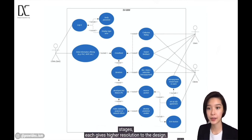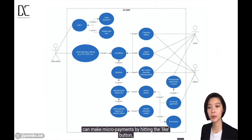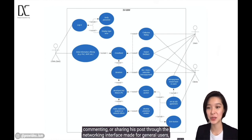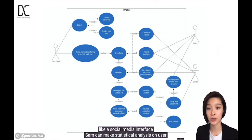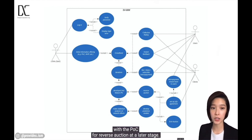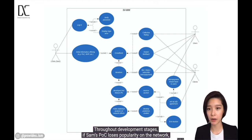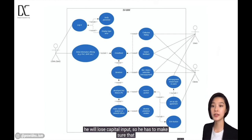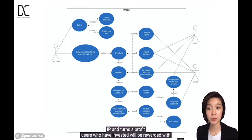Any users who appreciate the proof-of-concept and wish for it to be further developed can make micropayments by hitting the like button, commenting, or sharing his post on a networking interface — for instance, a social media interface made specifically for general users. Sam can make statistical analysis on user opinion and attention and develop predictive models to be packaged with the POC for a reverse auction at a later stage. Throughout development stages, if Sam's POC loses popularity on the network, he will lose capital input, so he must ensure his design captures users' opinions. If the POC successfully develops into a mature IP in terms of profit, users who have invested will be rewarded with micropayments.